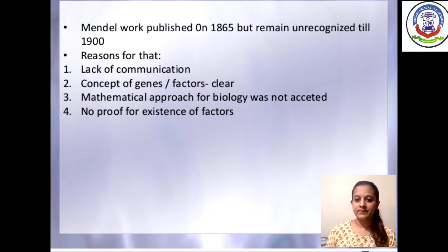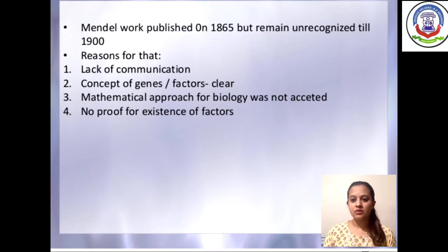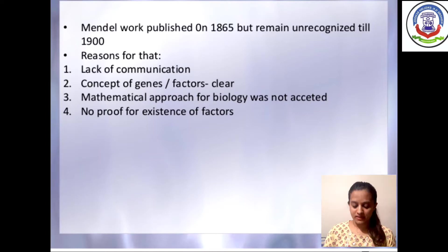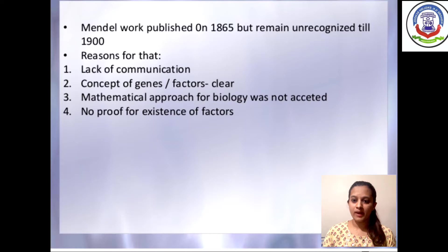The third reason is that for the first time in biology, he used mathematical logic, so it was very difficult for geneticists to understand this concept. The last reason is that there was no proof of the existence of genes — he could not identify the exact location of genes in the nucleus because at that time, the microscope had not been invented.